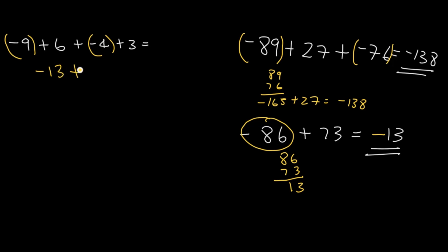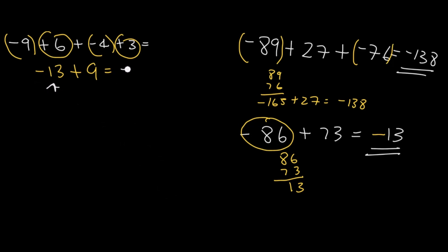Next, group the positive numbers and add them. 6 plus 3 equals 9. Now, since we are adding a negative number and a positive number, we subtract. Take the sign of the bigger number, which is negative. The final answer is negative 4.